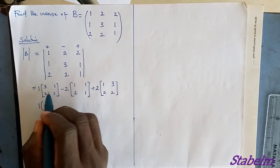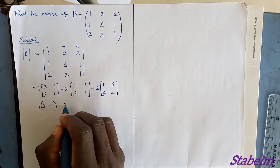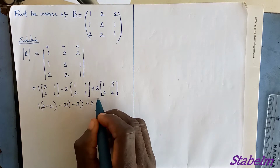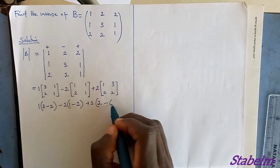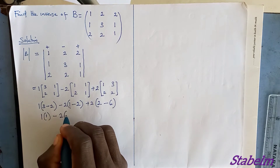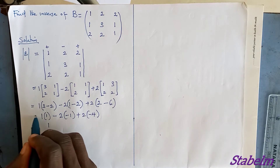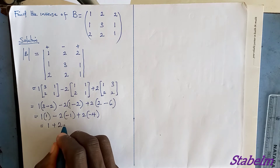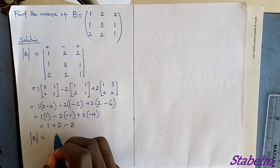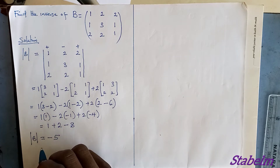Evaluating each 2x2 determinant: 1×(3×1 − 2×1) gives 1×1 = 1. Minus 2×(1×1 − 2×1) gives −2×(−1) = 2. Plus 2×(1×2 − 3×2) gives 2×(−4) = −8. So the determinant of matrix B equals 1 + 2 − 8 = −5.